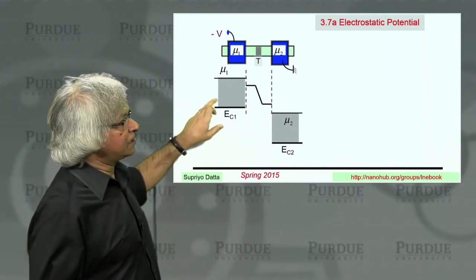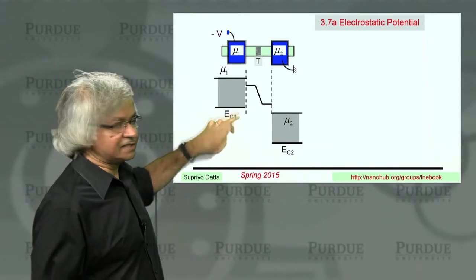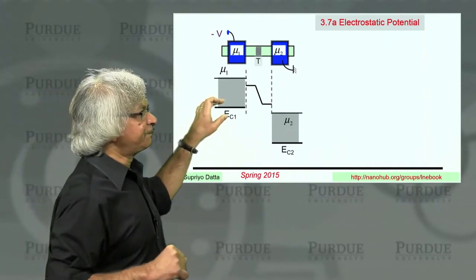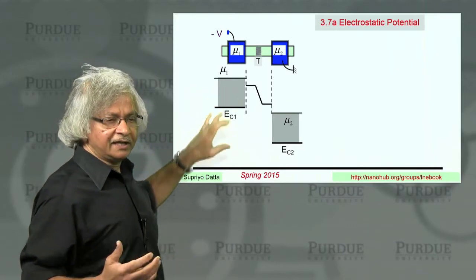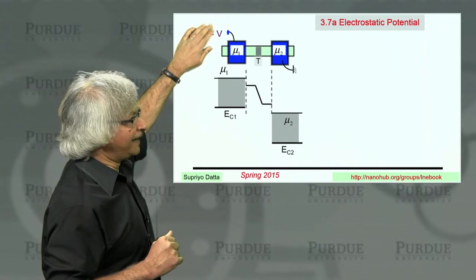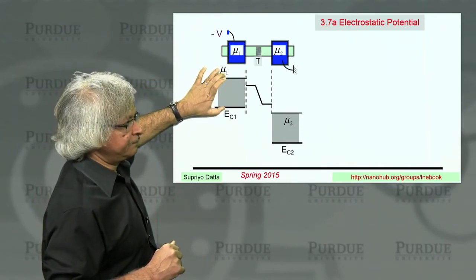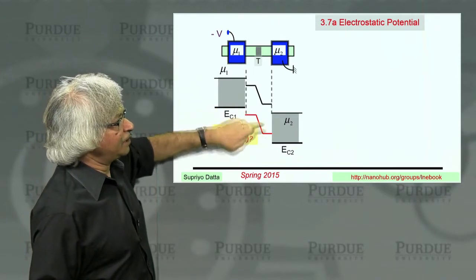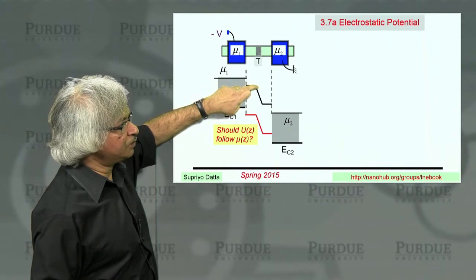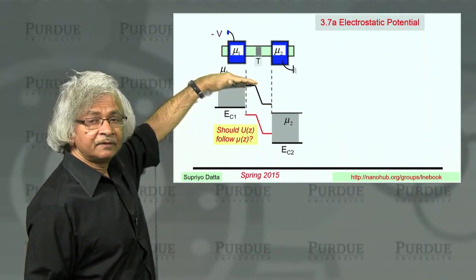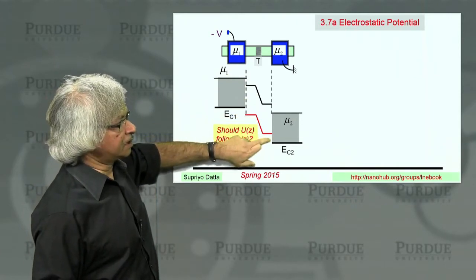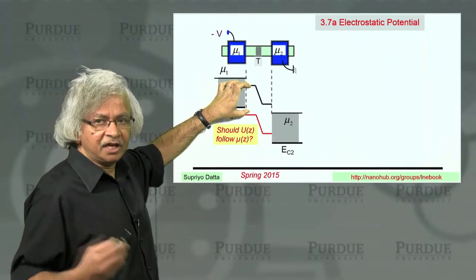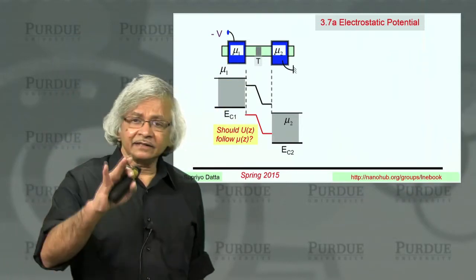The question is what does the bottom of the band look like in the middle, because the bottom of the band generally follows the electrostatic potential — except for a minus sign. Because we are drawing electron energies, the energy is minus Q times V, which is why when you have a negative voltage, the energy levels are all higher. If the bottom of the band followed mu exactly, then the electron density would remain unchanged from what it was before, and that cannot be quite right.